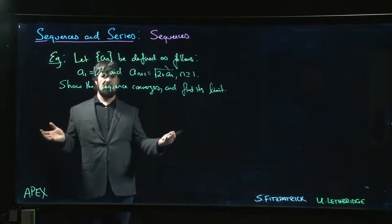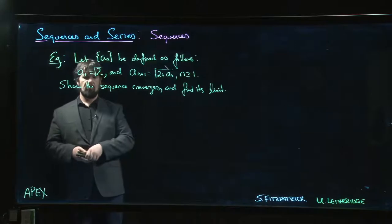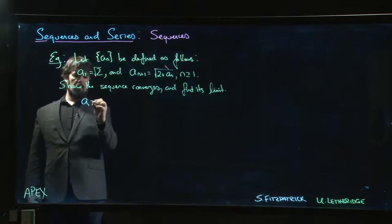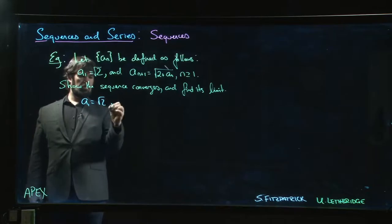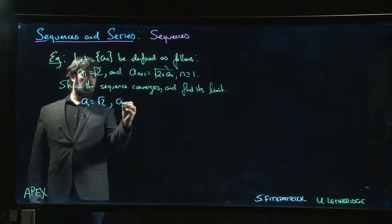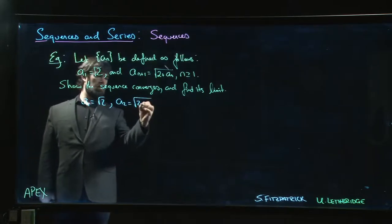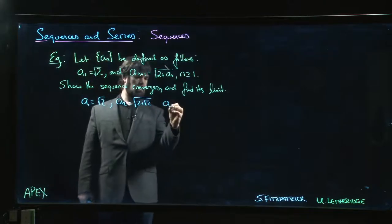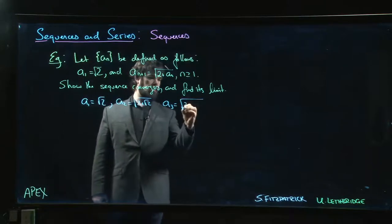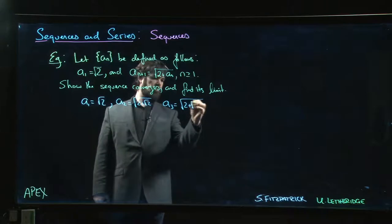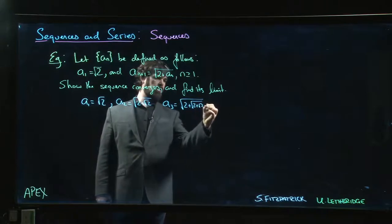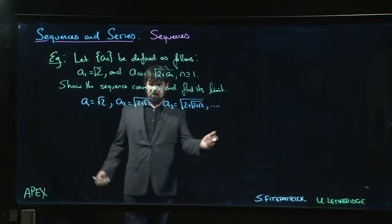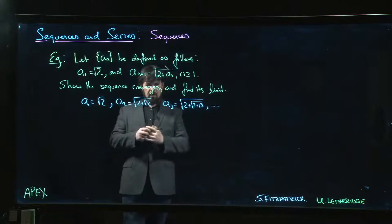Let's think about what the terms look like: a_1 is root 2, a_2 is root(2 + root 2), a_3 is root(2 + root(2 + root 2)), and so on. Is that even going anywhere, and if so, where?